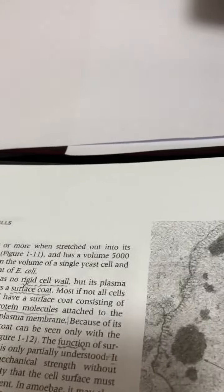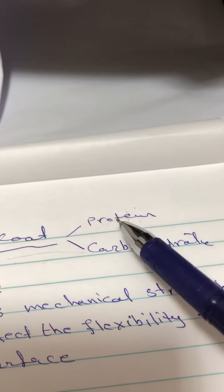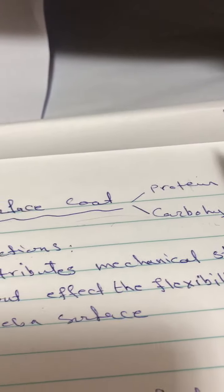The surface coat, or the structure of the surface coat, is protein and carbohydrate molecules.